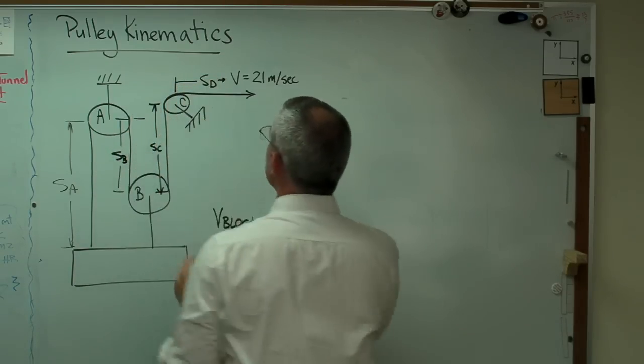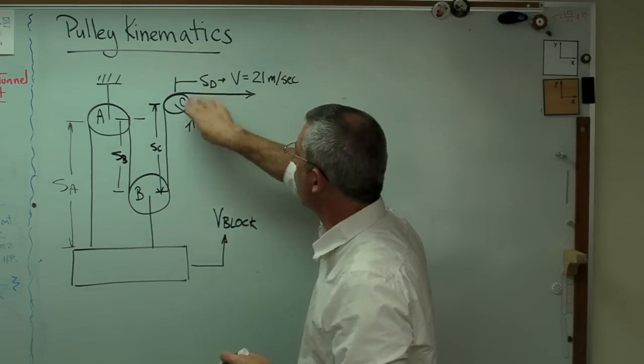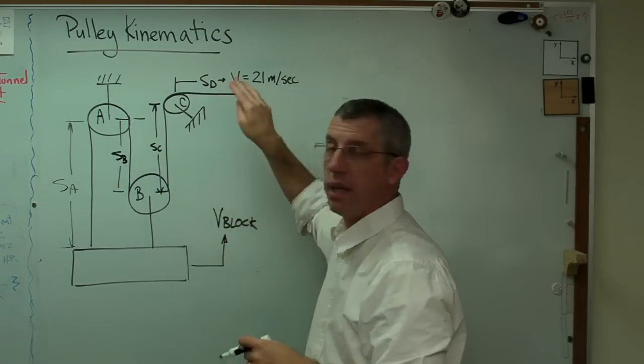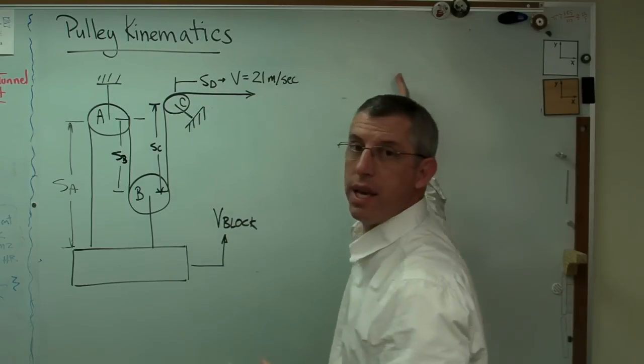Now, this distance goes out to some unknown point. We never actually need to know the actual numbers for SA, SB, SC, and SD. We're only going to look at their derivative, so it doesn't really matter that I don't know where the end of this is.